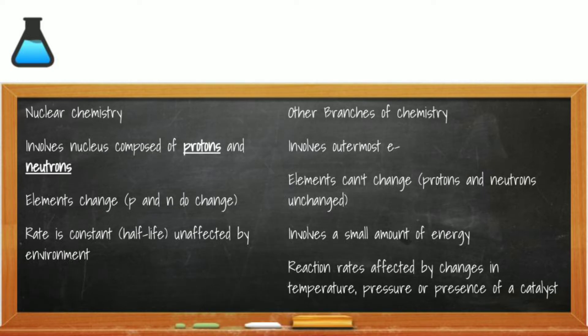Let's compare how nuclear reactions differ from chemical reactions. Nuclear reactions involve changes of protons and neutrons in the nucleus. When the nucleus undergoes changes, so will the element — so the element symbols on the reactant side of a nuclear equation are different than those on the product side. The rate of nuclear changes, also known as half-life, is not impacted by environmental changes such as temperature or pressure.